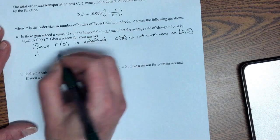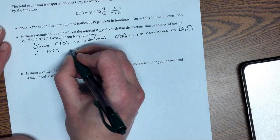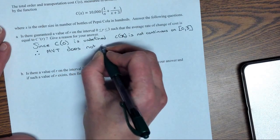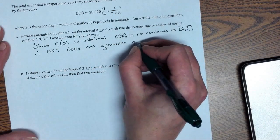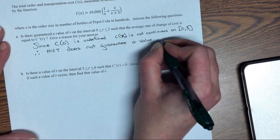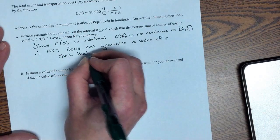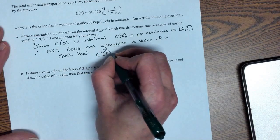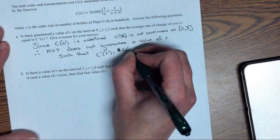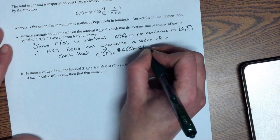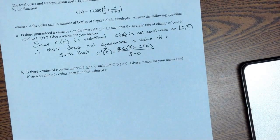Since c(0) is undefined, c(x) is not continuous on 0 to 3. Therefore, this would have been the Mean Value Theorem. Slope equals slope does not guarantee a value c.